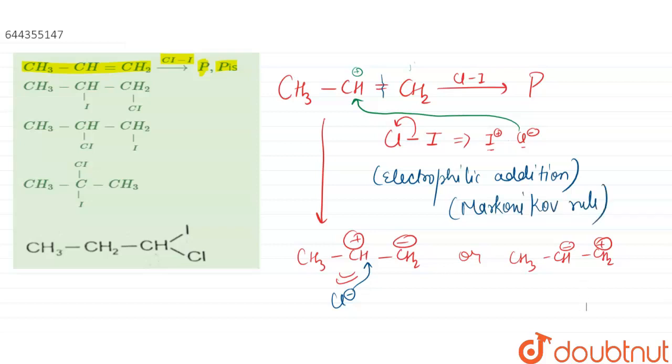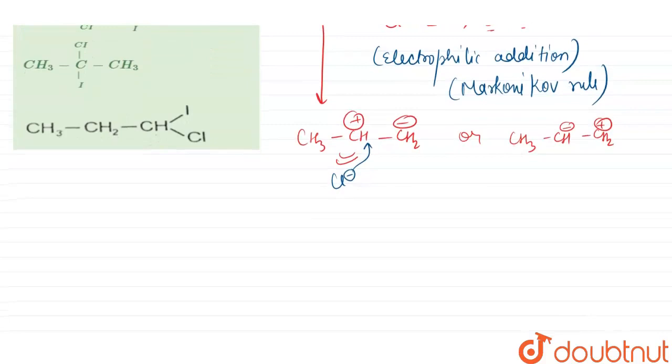What happens is, the product that will be formed here and this CH2 minus will attack on I plus electrophile. The P product that will be formed here will be CH3-CH-CL and CH2-I. This is the product that is formed. So this is our product P.